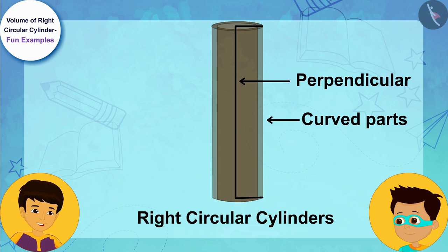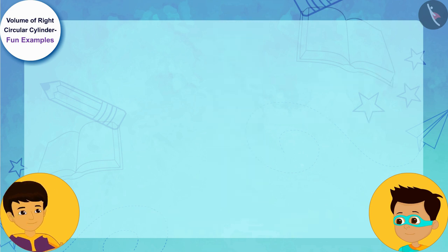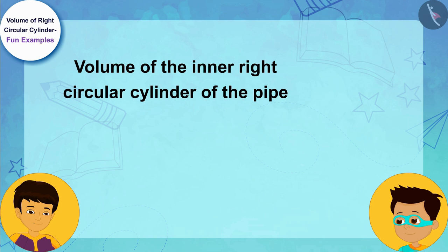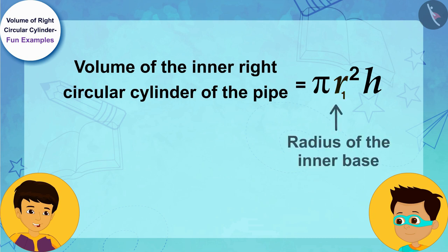Absolutely right, Thomas. We can write the volume of the inner right circular cylinder of the pipe as π r₁² h, where r₁ is the radius of the inner base of the cylinder and h is its height.